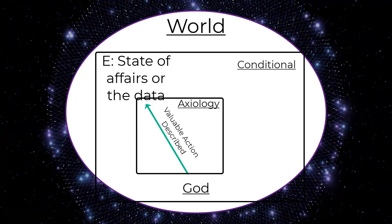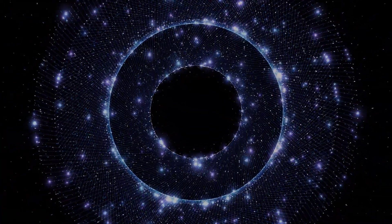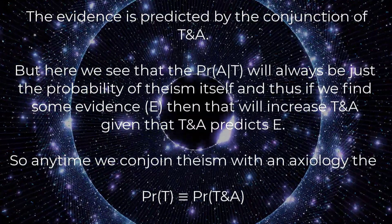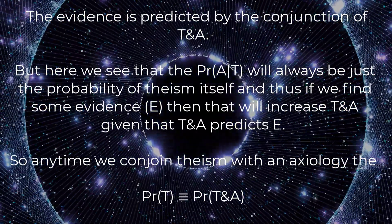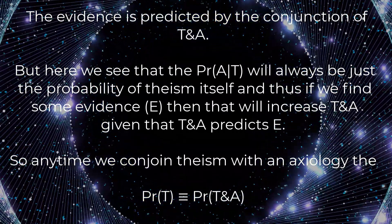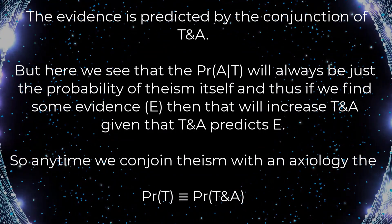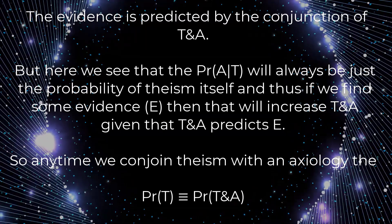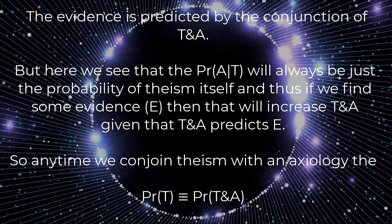Now of course it can only increase theism's probability if the evidence in question has axiological relevance — in other words, the evidence is predicted by the conjunction of T and A. But here we see that the probability of A conditional on T will always be just the probability of theism itself. Thus if we find some evidence E, that will increase T and A, given that T and A predicts E. So anytime we can join theism with an axiology, the probability of theism is logically equivalent to the probability of theism in the axiology.